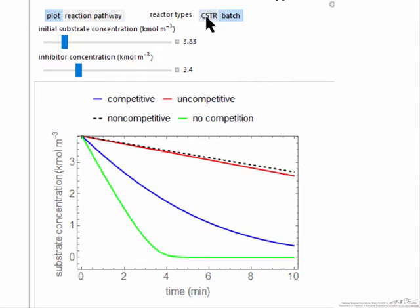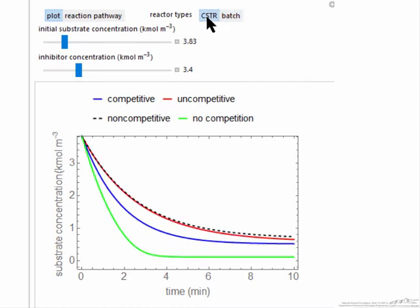This is for a batch reactor. For the CSTR, behavior as a function of residence time is, you see the reaction uses up material faster.